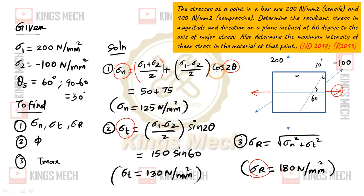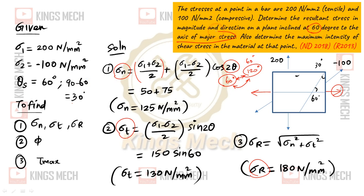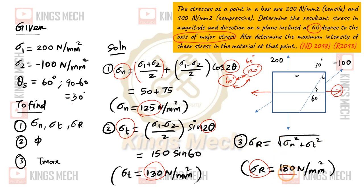Substituting the values with theta = 30°, so 2θ = 60°. The plane is inclined at 60° to the axis of major stress. Substituting: sigma1 = 200, sigma2 = -100, sin 60° value gives normal stress = 150. Taking the squares and square root, the resultant stress comes out to 180 N/mm².